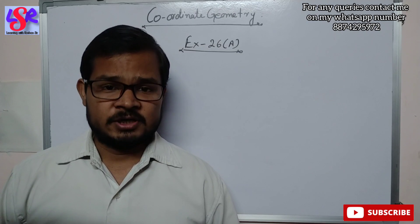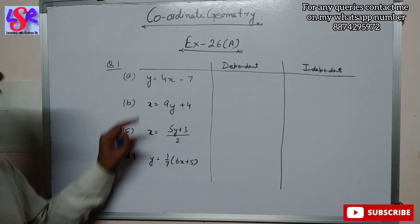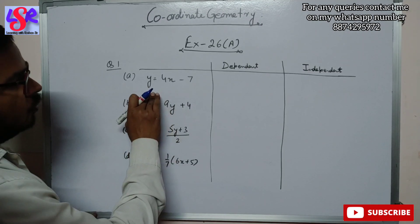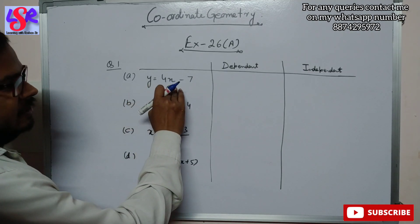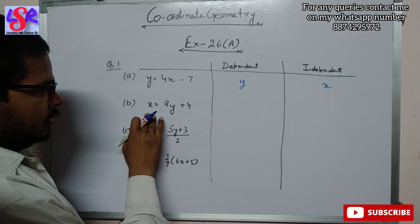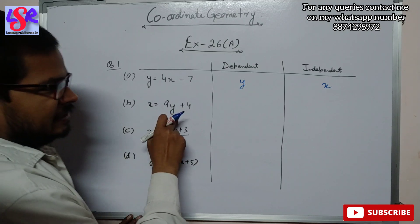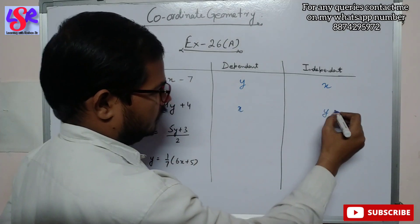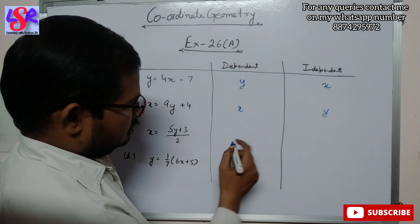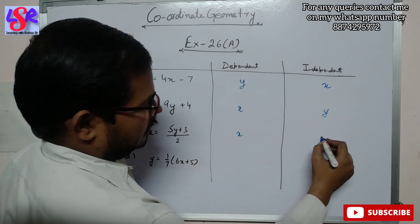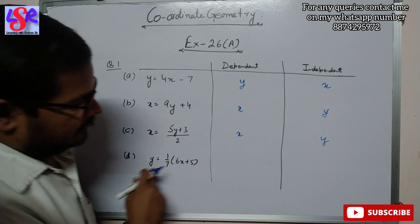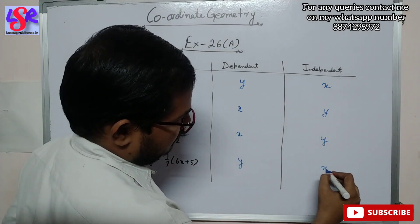Now let's begin with exercise 26a, question number 1. Here we can tell which variable is dependent and which variable is independent. In the first part, y is dependent and x is independent. In the second part, x is dependent and y is independent. In the third part, x is dependent and y is independent. Then in the last part, x is independent and y is dependent.